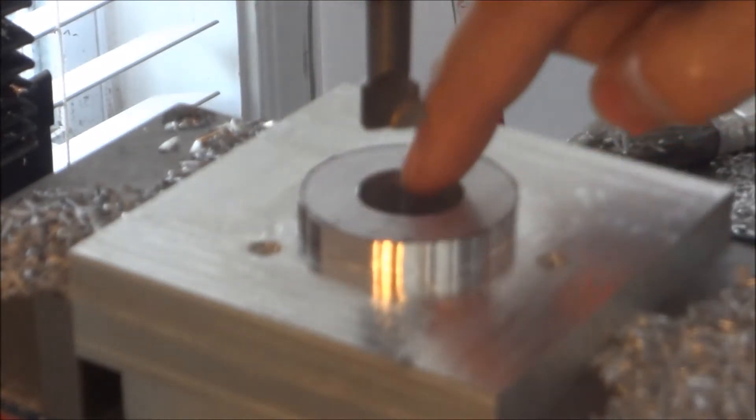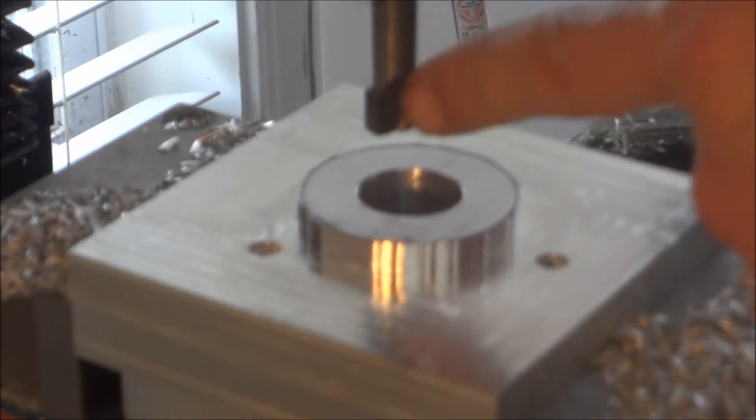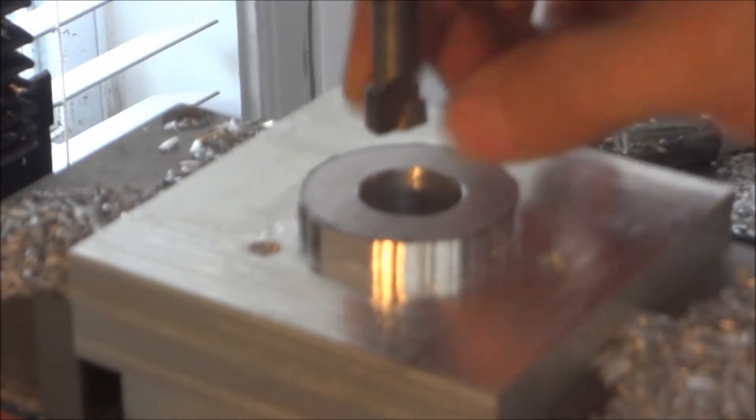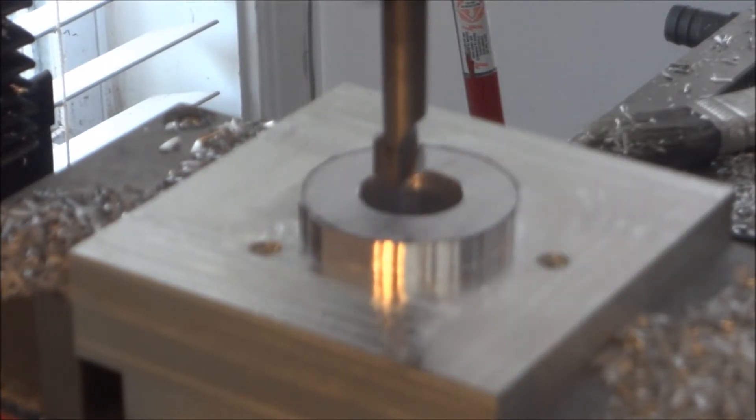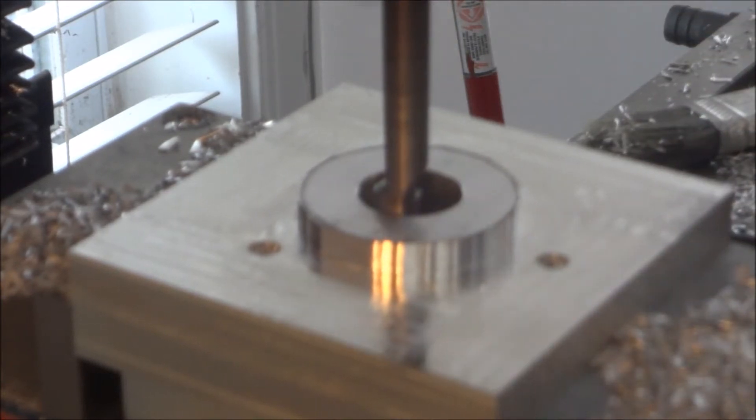So what I did was I stuck my boring bar in here, I turned it around backwards, and what I did was I just lowered this into the hole and then adjusted this out and kind of moved it around until I got it to touch around the whole circumference. And you know, I just adjusted my x and y and then when I got it to where I wanted it, I just locked everything down.